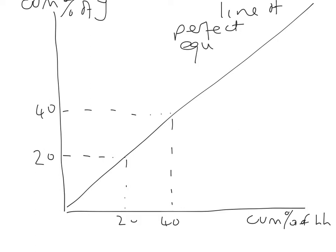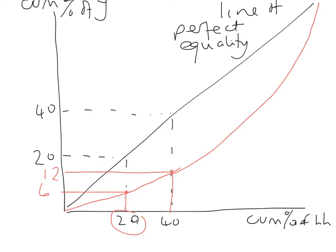Economies don't tend to be perfect in that way. Now, through a lot of their work, particularly the work of Lorenz, they discovered that it may well be that 20% of households only had perhaps 6% of the income or wealth within an economy, and perhaps 40% in the economy only had 12%. So if we were to join these red dots together and continue that on, we might get a shape that bows out from the line of perfect equality.